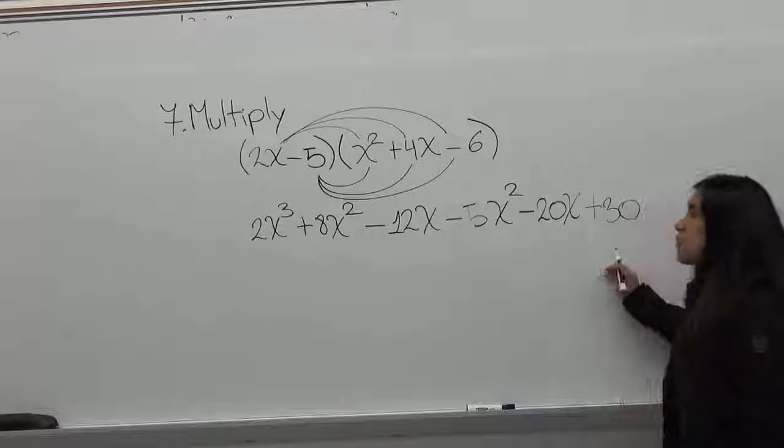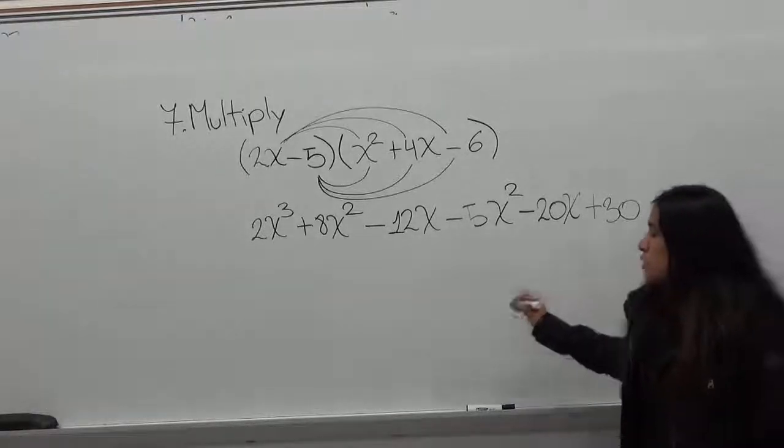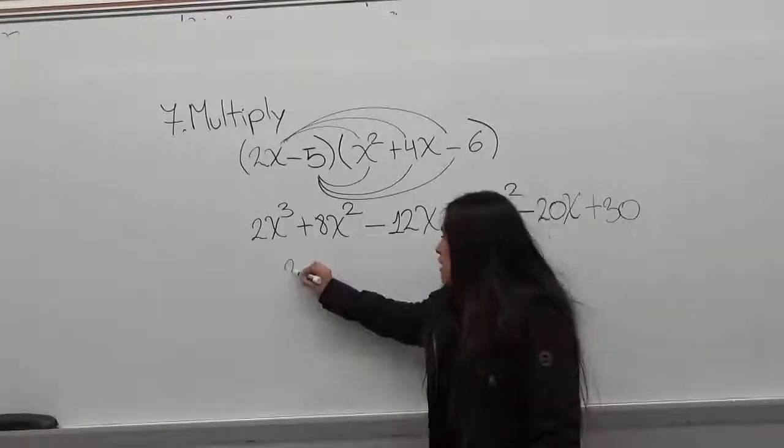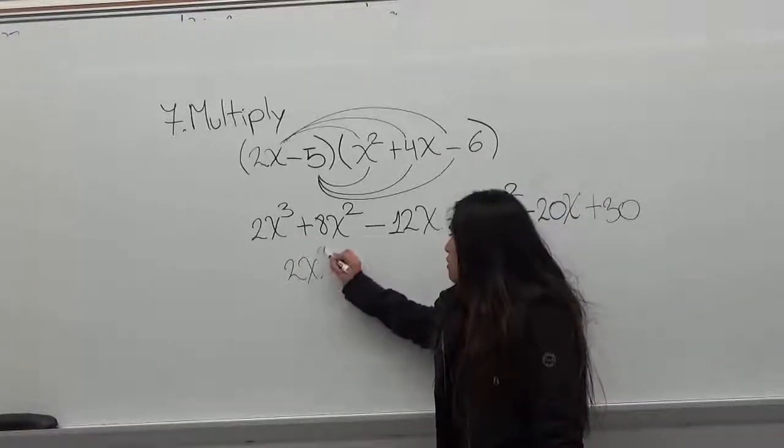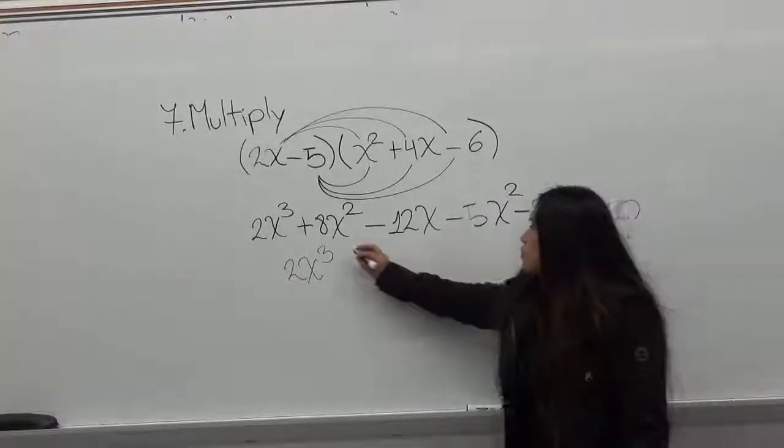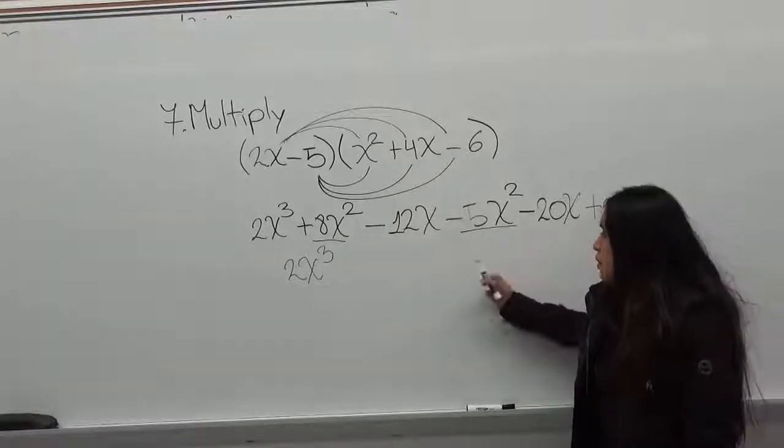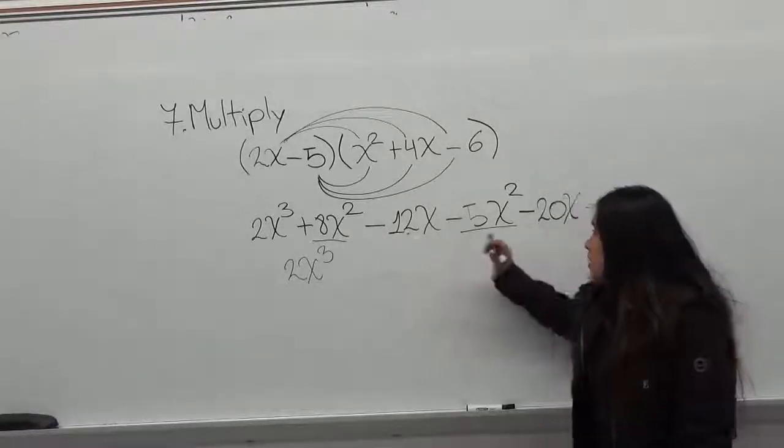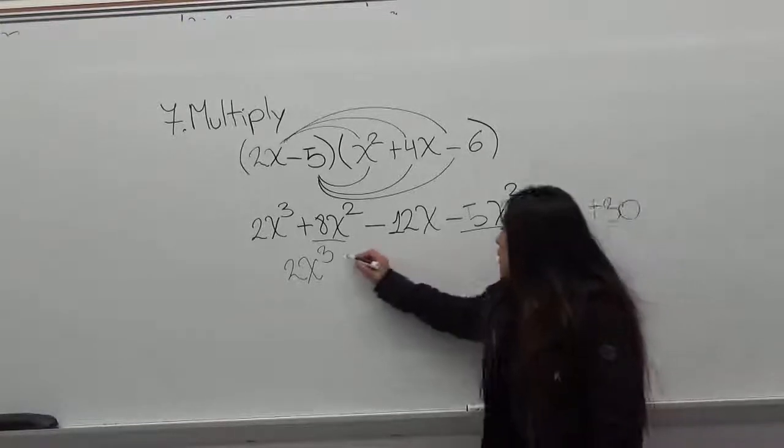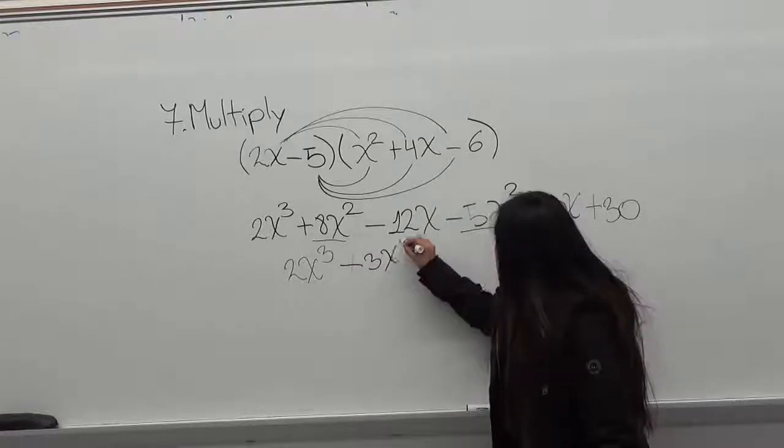So now you have to see which ones are similar. You just have one x cubed term, so you put it as 2x cubed. Now you have two x squared terms, so you have plus 8x squared minus 5x squared, which gives you plus 3x squared.